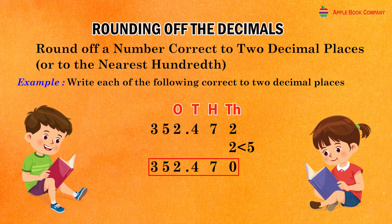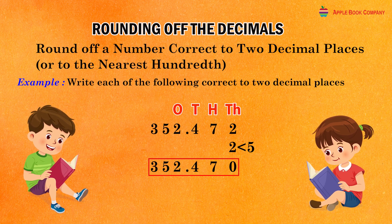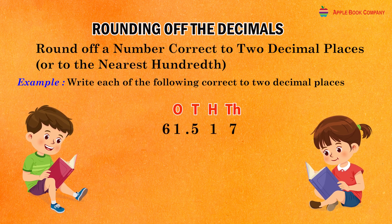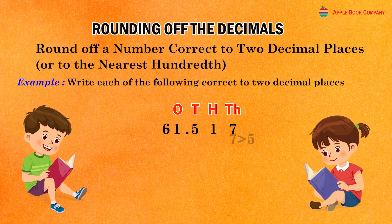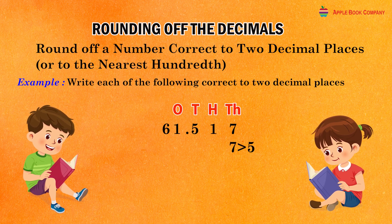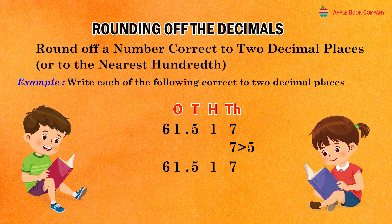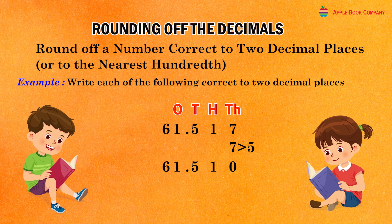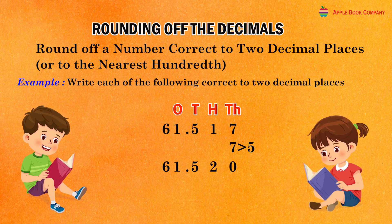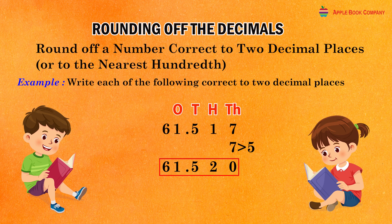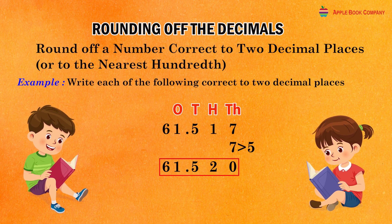Rounded number is equal to 352.47. The given decimal is 61.517. Here, the digit at the third decimal place is 7 which is greater than 5. So, replace every digit after it along the right side by zero and increase the digit at the second decimal place by one. Rounded number is equal to 61.520.